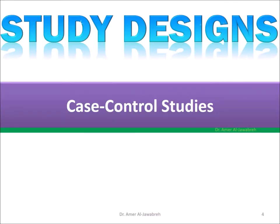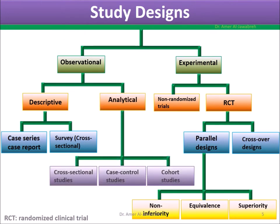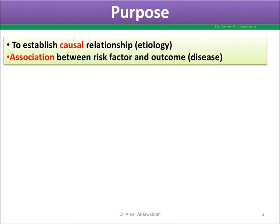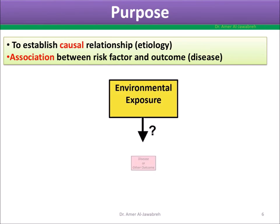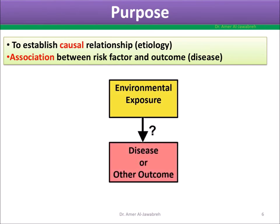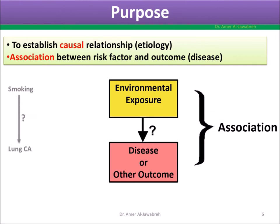Case Control Studies. A case control study is an observational analytical type of study. Its purpose is to establish a causal relationship — the etiology and association between a risk factor and disease. Examples include environmental and health exposures such as smoking, benzene, and obesity, associated with diseases like lung cancer, leukemia, and CATs, respectively.